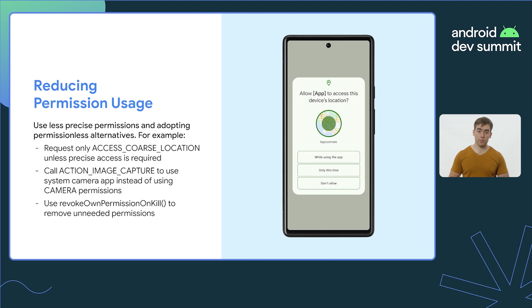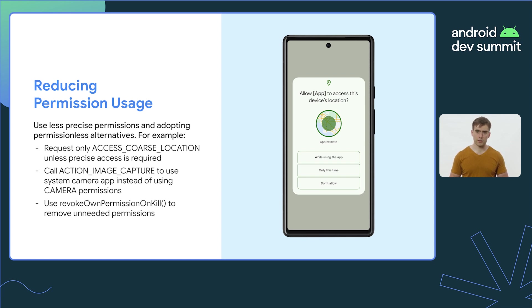A great way to avoid user denial of permission requests is to use less precise permissions or reduce usage of permissions altogether. This communicates to users that their privacy is being respected. Many location use cases do not require precise location access, so we encourage you to only request coarse location unless the current feature the user is actively engaging with requires precise location. Apps can also reduce permission usage by choosing permissionless alternatives, like the ACTION_IMAGE_CAPTURE intent to leverage the system camera app instead of requesting camera permissions, or by using the revoke-own-permission-on-kill APIs if they no longer require a permission — for example, when using permission-protected data exclusively during user onboarding.